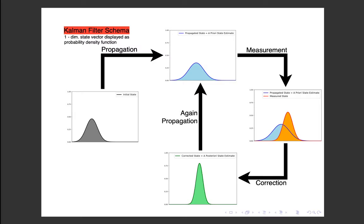This slide gives us a schematic overview of the Kalman filter algorithm. We are considering a one-dimensional system here, and the state vector is displayed as a probability density function. Basically, the Kalman filter is a two-step algorithm. In the first step, we are considering a system model that is telling us how the state vector of the system is propagating in time. During this propagation of the state vector to the subsequent time step, the uncertainty increases and the state spreads, because our system model is not perfect.